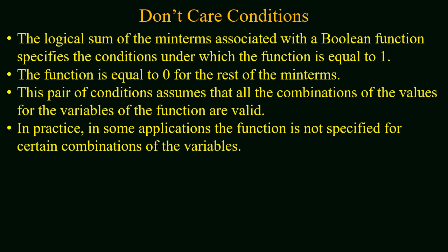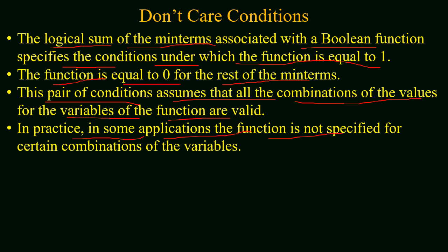Any given boolean function associated with any digital system can have a value of one or zero. The logical sum of min terms associated with a boolean function specifies the condition under which the function is equal to one, and the same function is equal to zero for the rest of the min terms or max terms. This assumes that all combinations of variable values are valid, but in practice, in some applications the function is not specified for certain combinations of variables — you may encounter a system for which the output may not be defined for all input combinations.